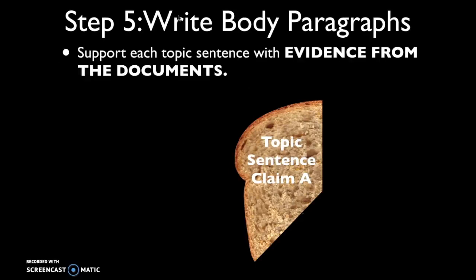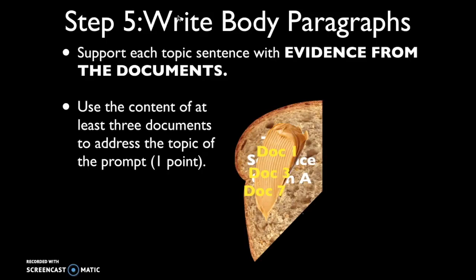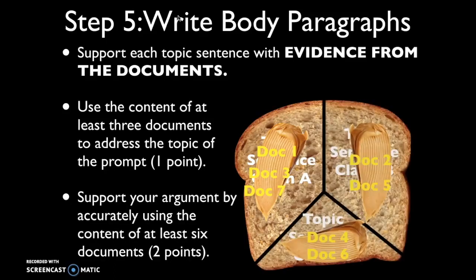For each of the body paragraphs, you're also going to use the various documents that support the particular claim you're making — that's the peanut butter in our metaphor. You may have two, three, or even four documents per body paragraph. You need to use the content of at least three documents to address the topic of the prompt, which is worth one point. If you successfully use at least six documents accurately, that's worth two points. So you'll need multiple body paragraphs where you assert claims and use source material from the documents to support them.